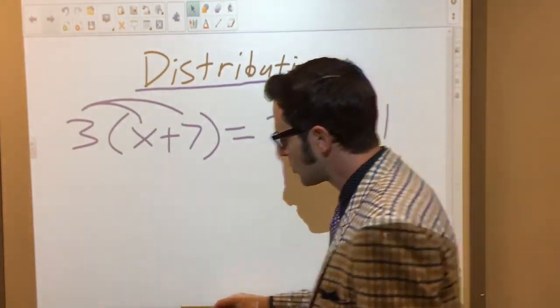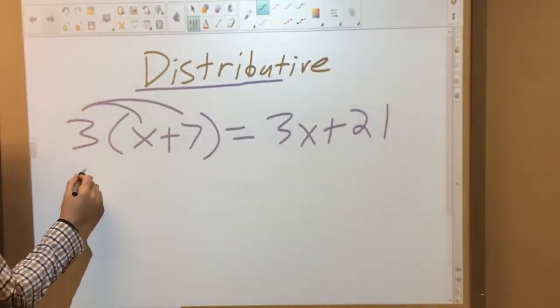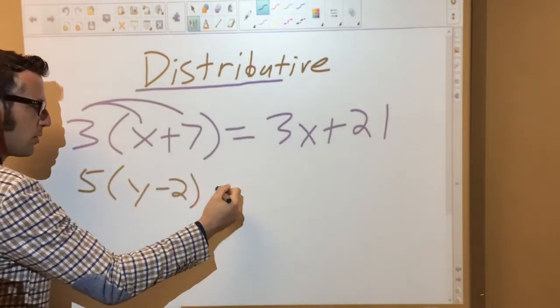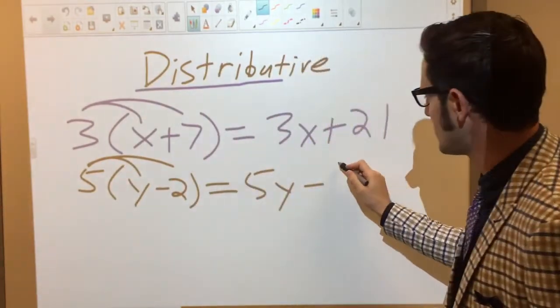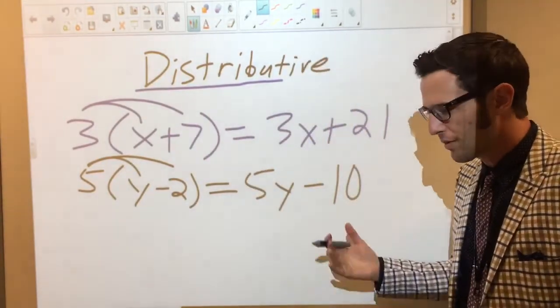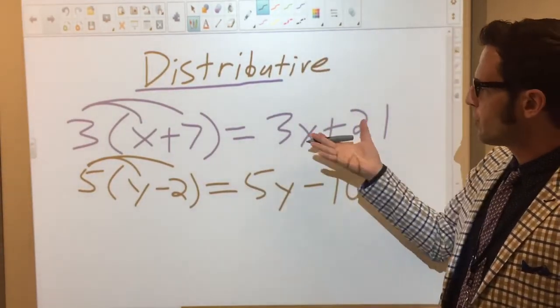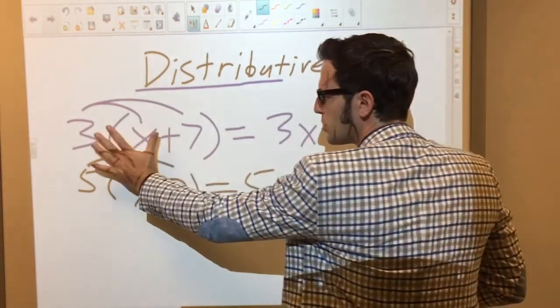It works over subtraction as well. You could say 5 times y minus 2. Well, 5 times y is 5y, minus 5 times 2 is 10, or negative 10. So you end up with a completely different set of numbers than you had originally.